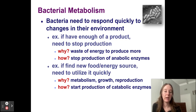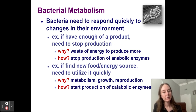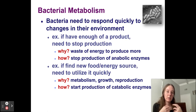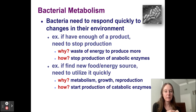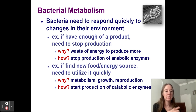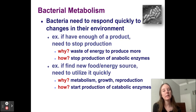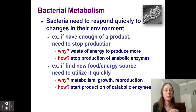Bacteria stop the production of anabolic enzymes. Anabolism is the building of molecules. Bacteria have enzymes they need to build to help them break down different products in their environment. If you have enough of something, you don't need to build anything else, so you'll stop producing that product. If there's a gene for a product in bacteria, it'll turn that gene off so it doesn't waste energy producing more.